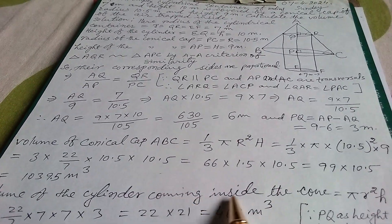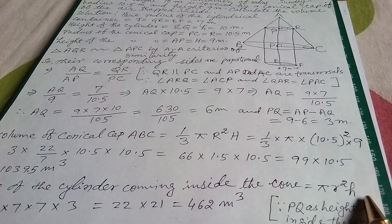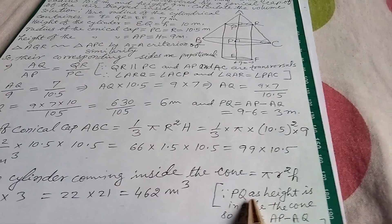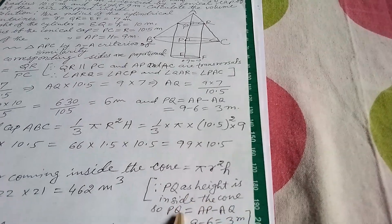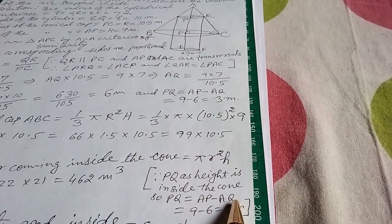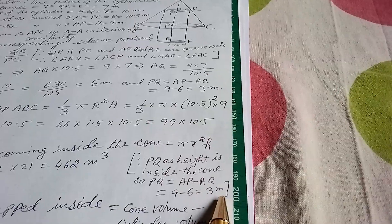Now volume of the cylinder coming inside the cone equals π r² h. Since PQ as height is inside the cone, PQ equals AP minus AQ, that is 9 minus 6 equals 3 meter.